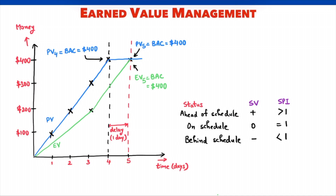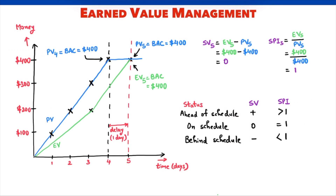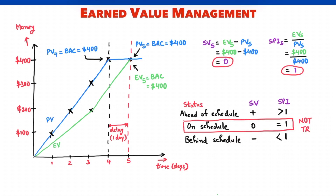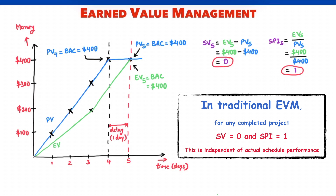At the end of the 5th day, earned value is $400 and planned value is also $400. So schedule variance will be $0 and SPI will be 1. This means the project appears on schedule — but that's not true. We have a delay of 1 day. There is clearly a problem with the traditional EVM approach.